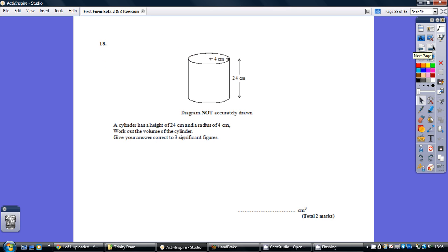Question 18, have a go. So this is a prism. Remember what a prism is. It's some three-dimensional shape where it's the constant cross-section throughout.